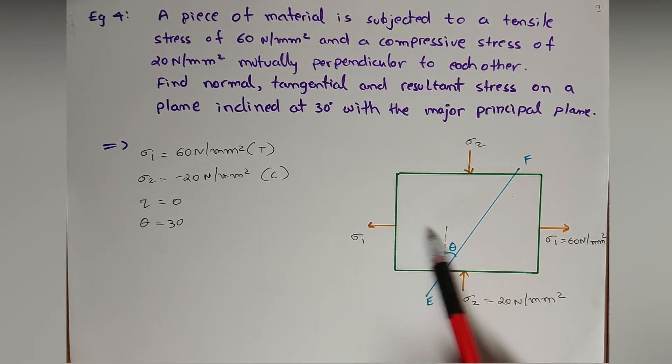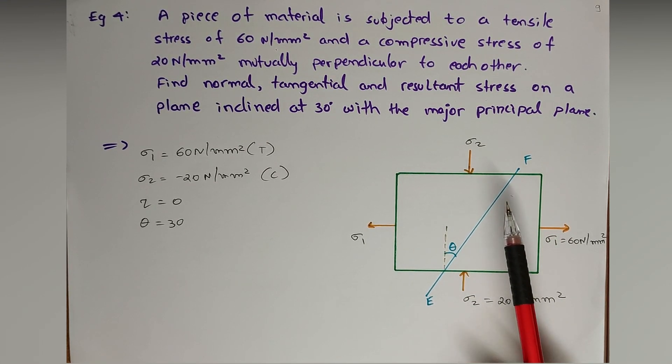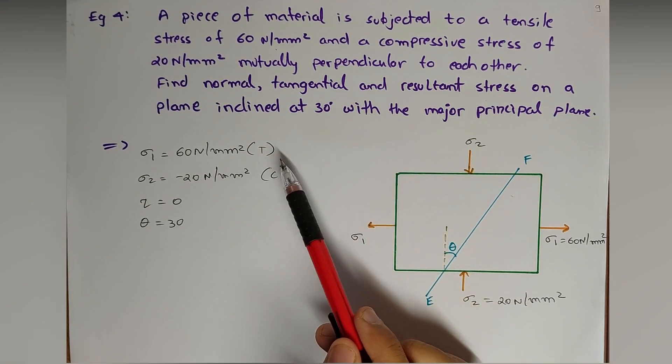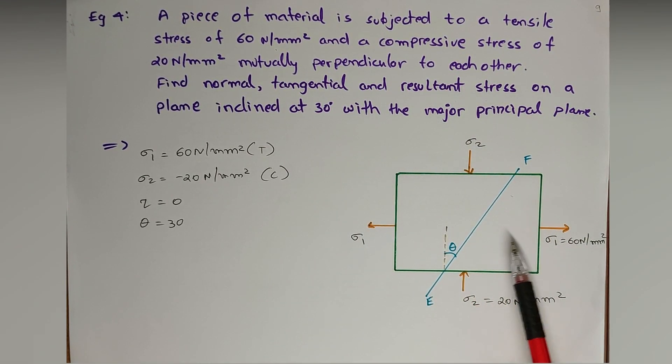So this is our major principal plane because it is carrying the maximum stress, and we need to find the normal, tangential, and resultant stresses on a plane inclined at 30 degrees with the major principal stress.